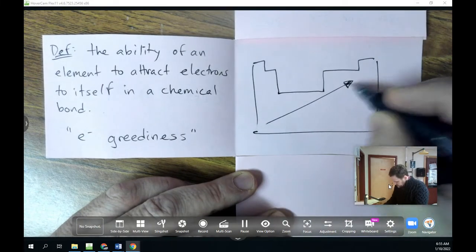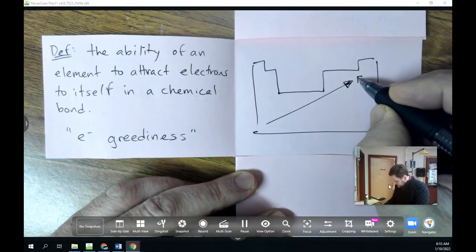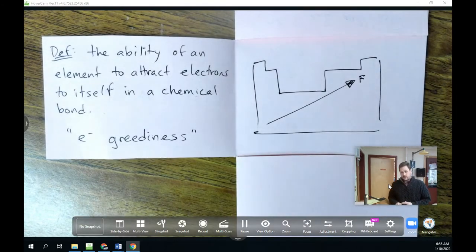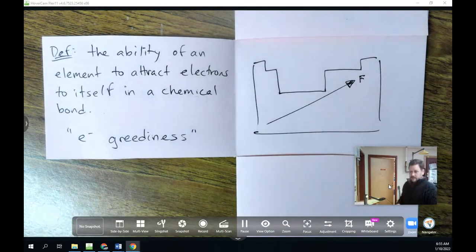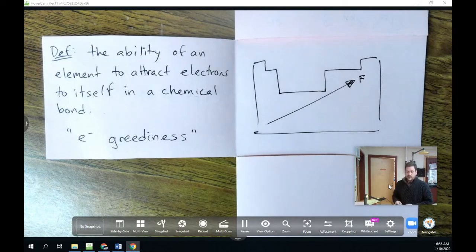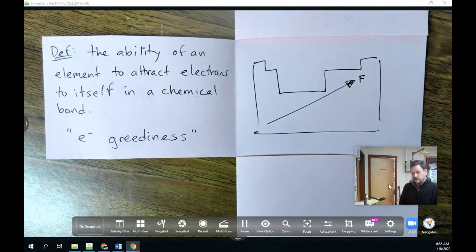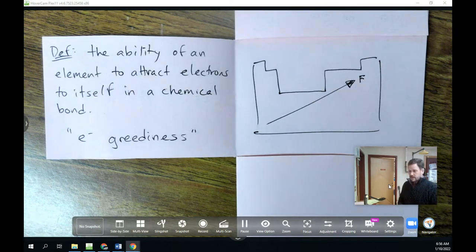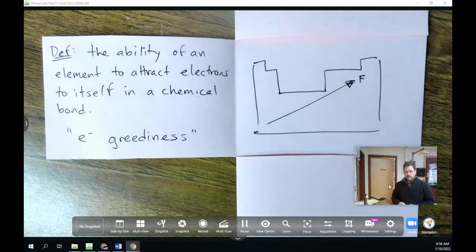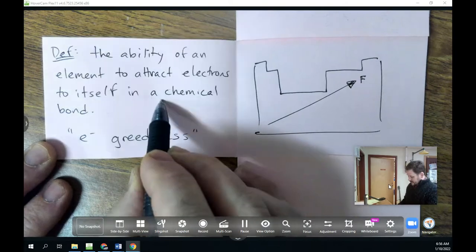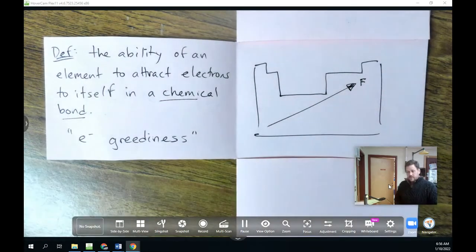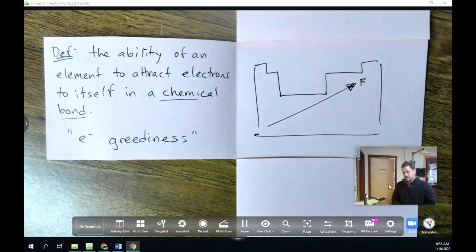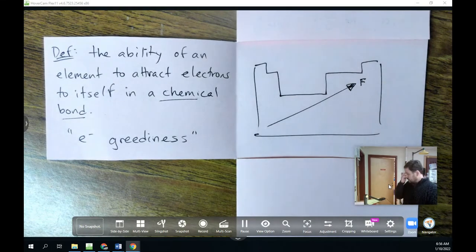Electronegativity is also going to increase in this direction, but it terminates with fluorine. And the reason it does not terminate with helium is helium, while it has a high ionization energy, is not particularly electron greedy. You know that helium already has a full valence shell. And so it isn't likely to gain electrons, and it also doesn't form bonds, making this entire thing moot. As a matter of fact, the electronegativity for helium is really undefined, as it is for most noble gases.